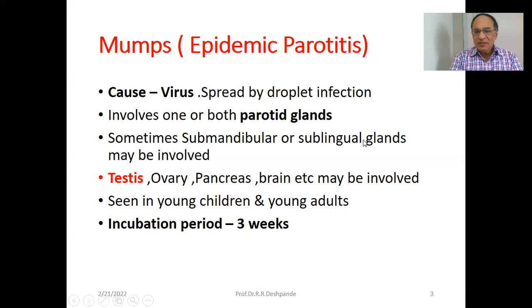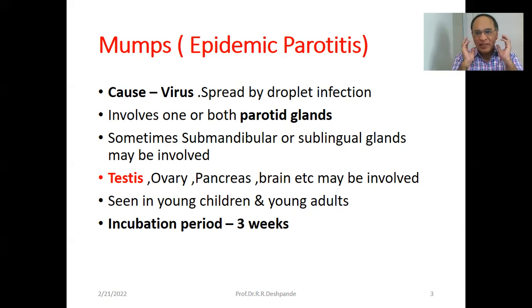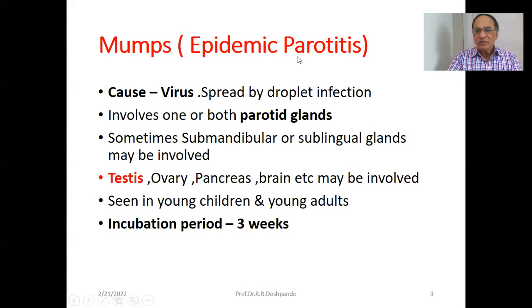So what is mumps? It can be called as epidemic parotitis. It is called epidemic because it spreads very fast in a locality — unlike the coronavirus pandemic, this is only epidemic. There are two parotid glands, which are salivary glands, and mumps involves inflammation of one or both parotid glands, mostly on one side.